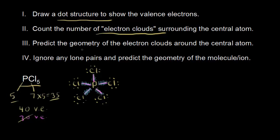The next step is to predict the geometry of the electron clouds. Those valence shell electrons are going to repel each other — that's VSEPR theory: valence shell electron pair repulsion. Since they're all negatively charged, they repel and try to get as far away from each other as possible. When you have 5 electron pairs, the furthest they can get from each other is a trigonal bipyramidal shape.